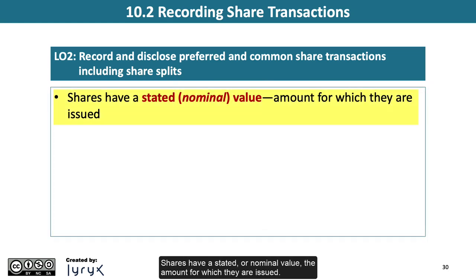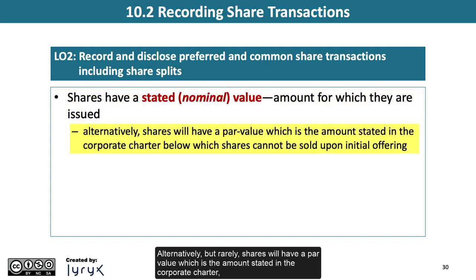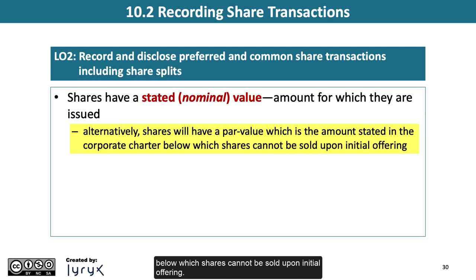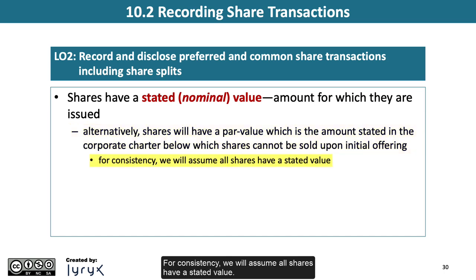Shares have a stated, or nominal, value — the amount for which they are issued. Alternatively, but rarely, shares will have a par value, which is the amount stated in the corporate charter below which shares cannot be sold upon initial offering. For consistency, we will assume all shares have a stated value.